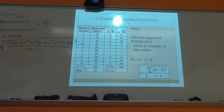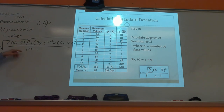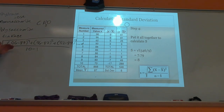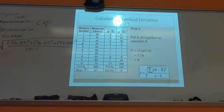This slide summarizes how we got the result. They call n minus one the degrees of freedom — take your number of data values and subtract one. Putting it all together and doing all that math, you get a standard deviation of 7.79.